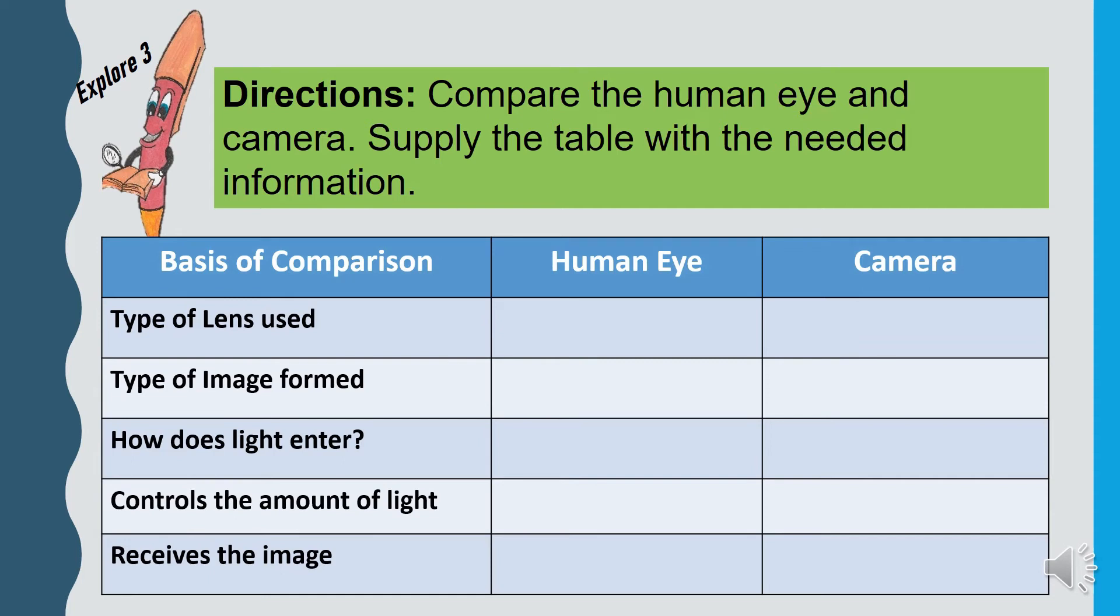In comparing the human eye and camera, here are the basis of comparison. The type of lens used. The type of image formed. How does light enter? What controls the amount of light? And what part receives the image?